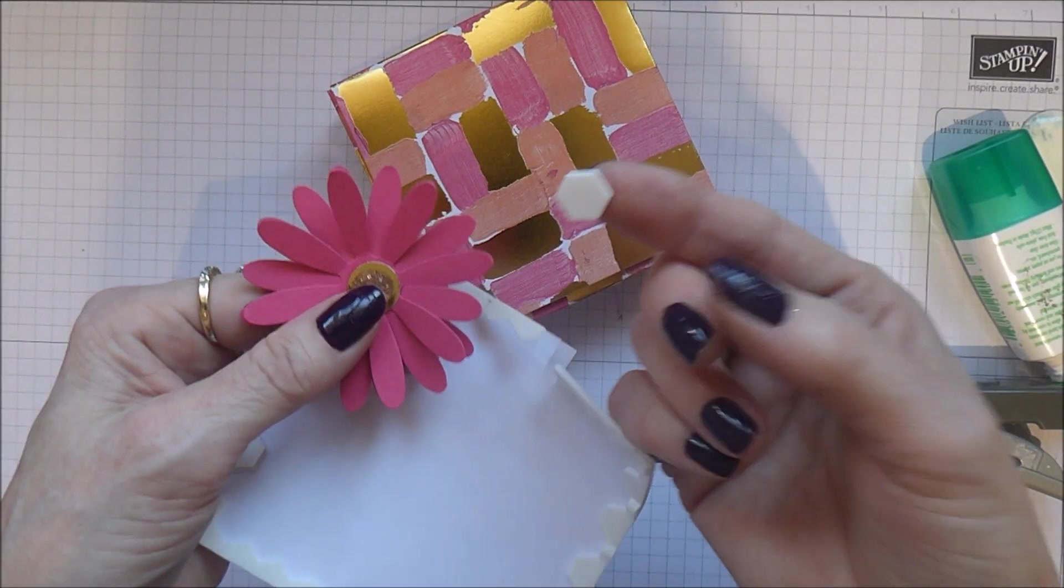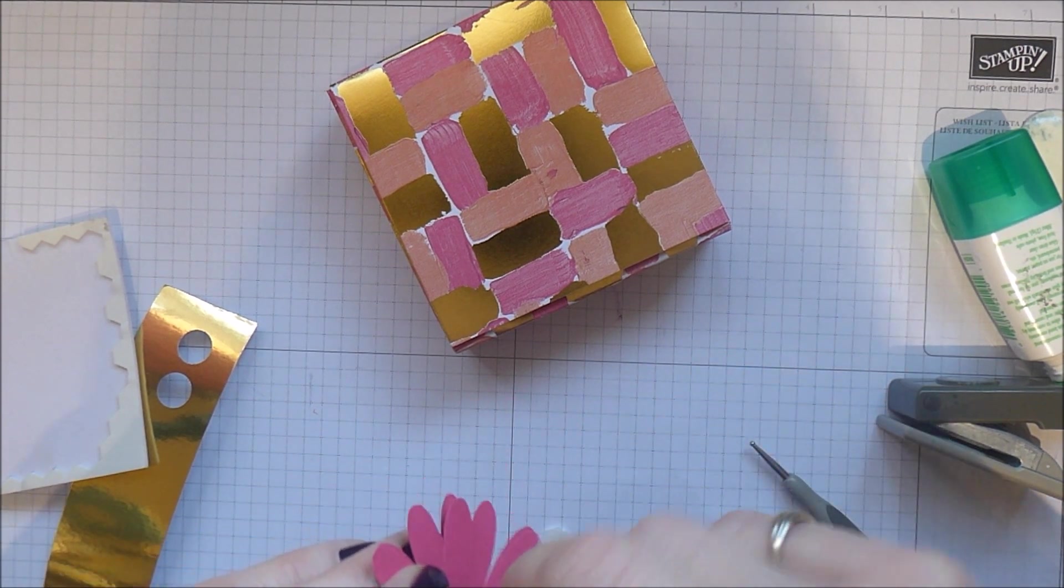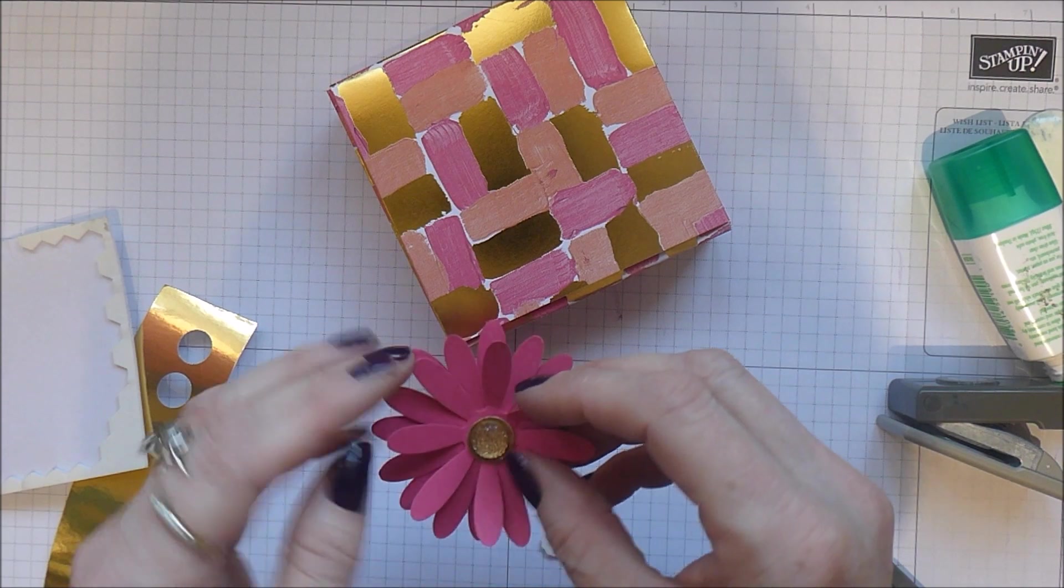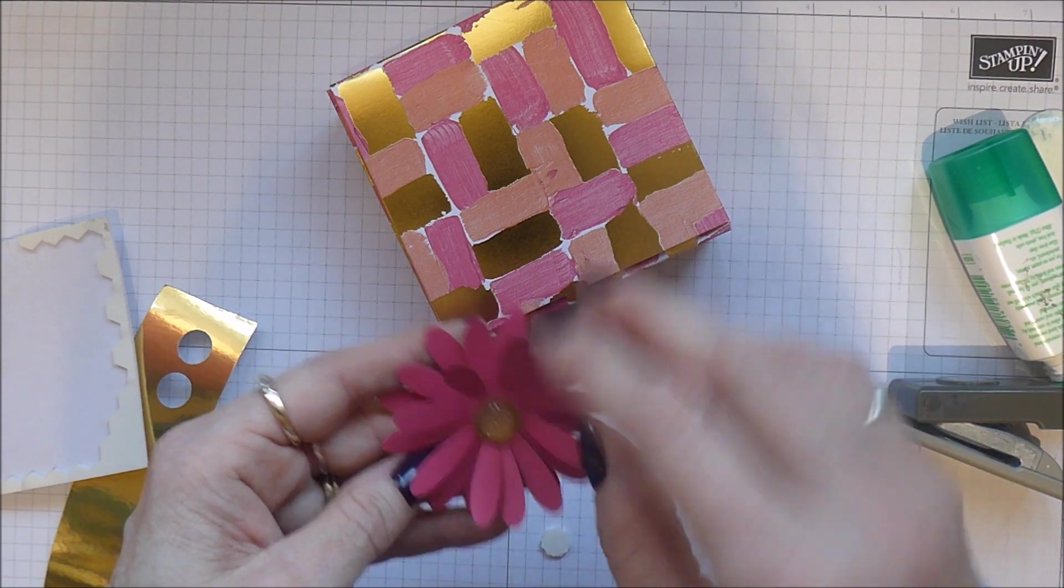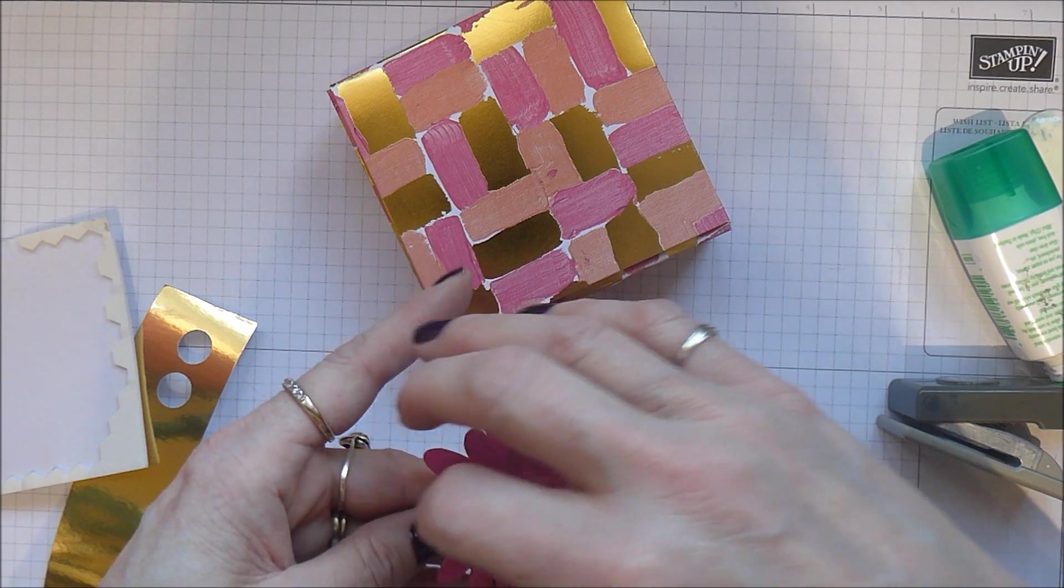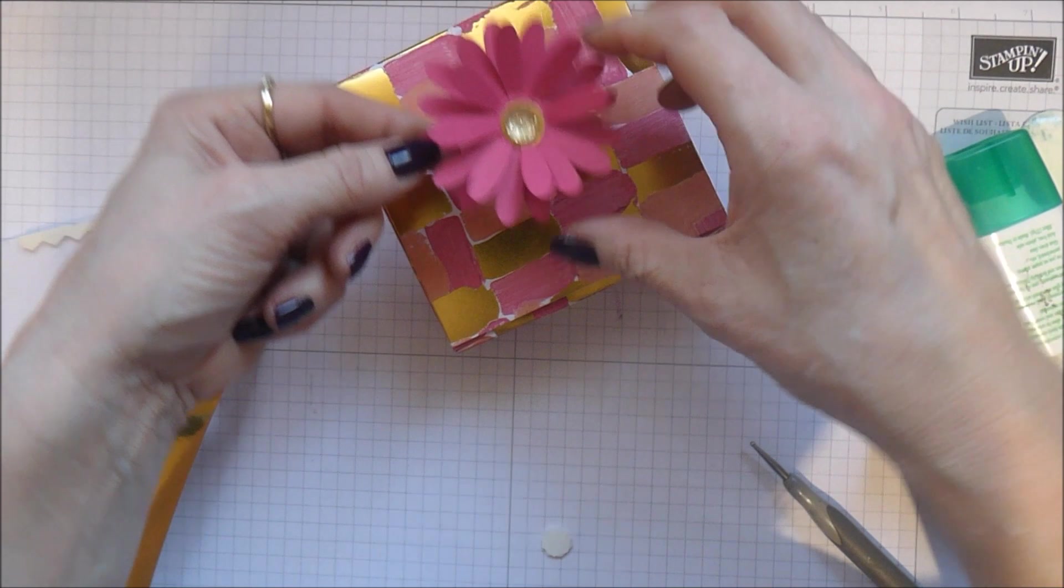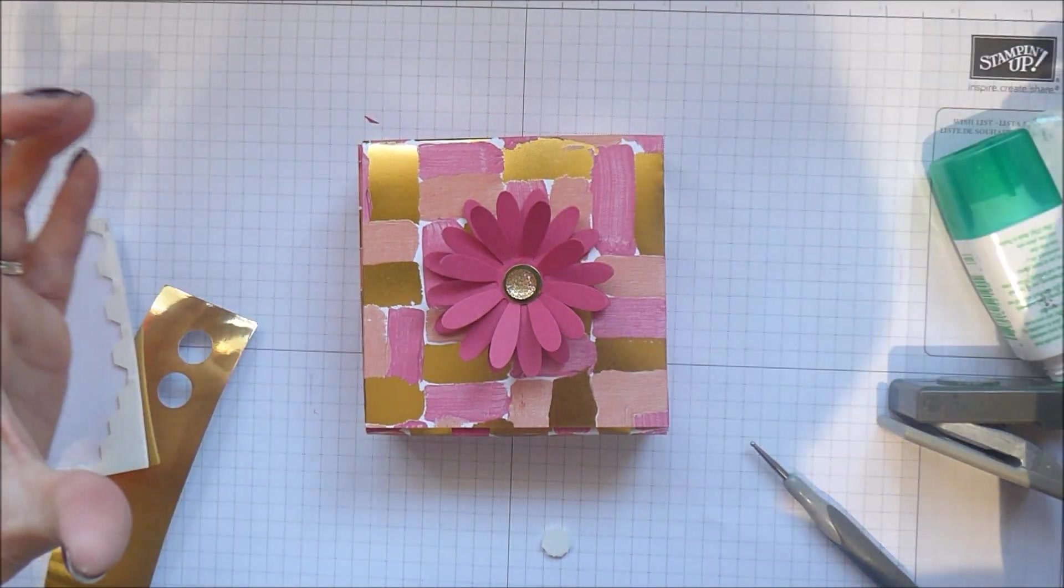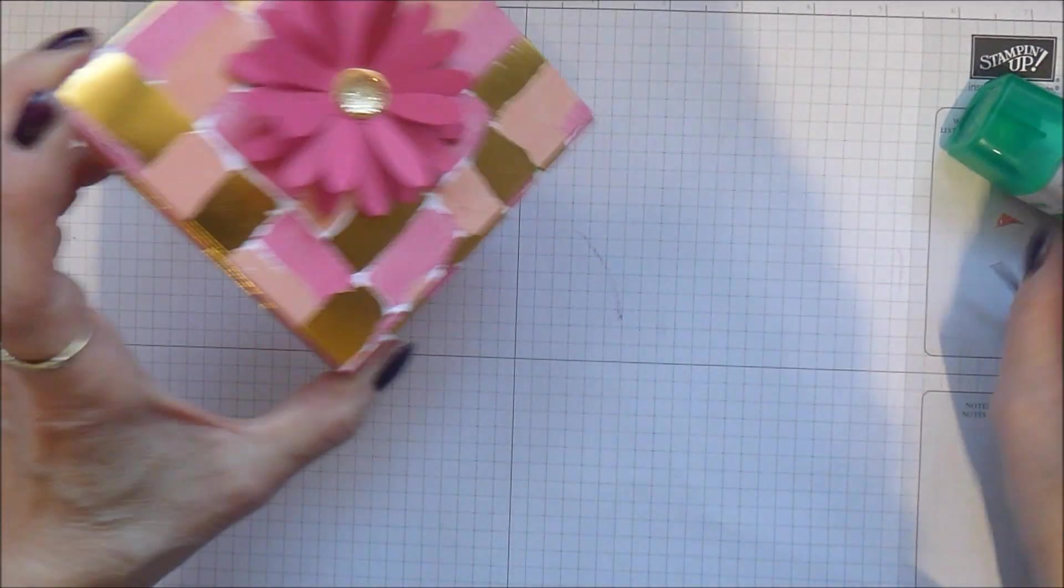So I'm just using a dimensional now. I'm going to pop that onto the base. Primp these up again. It's such a pretty flower. And I'm just going to find roughly the centre of the front of my box. And stick it down. And it is as simple as that.